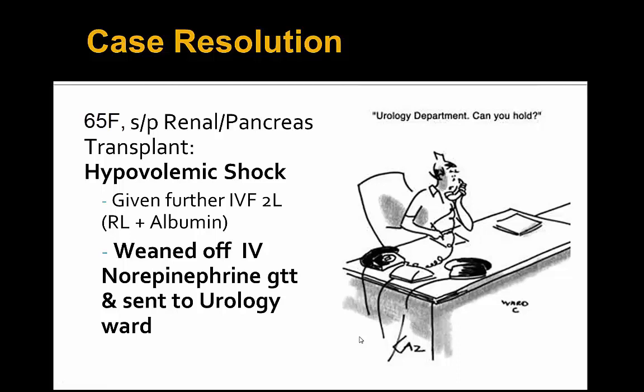In terms of case resolution, this female in hypovolemic shock post-renal and pancreatic transplant, after blood loss in the OR, received two liters of Ringer's and albumin combined, and was eventually weaned off her 8 micrograms of norepinephrine and sent up to the urology ward. Good resolution to this case without requiring ICU admission.